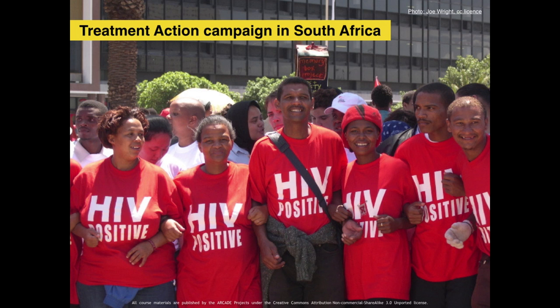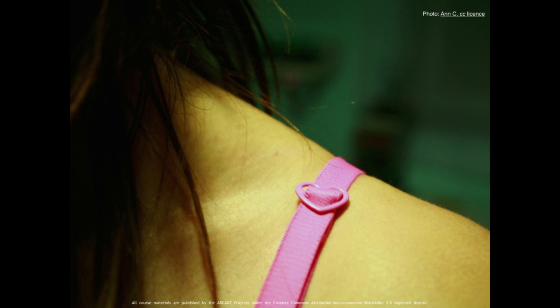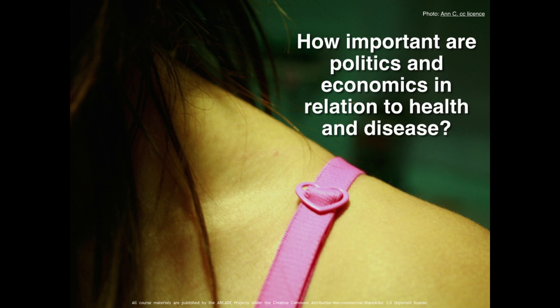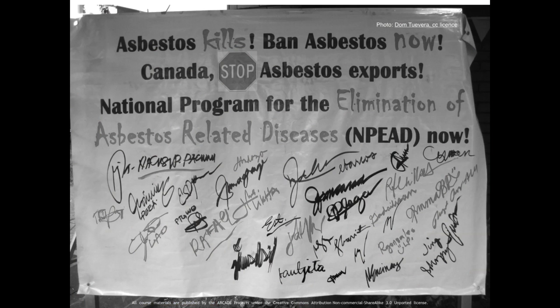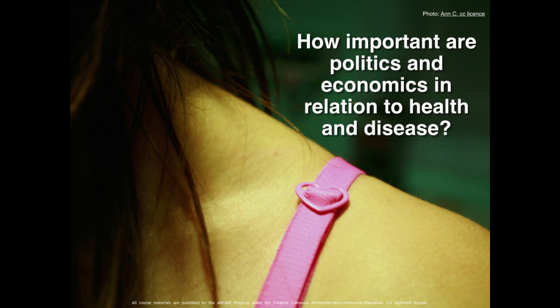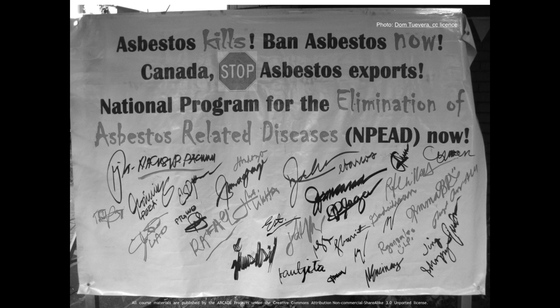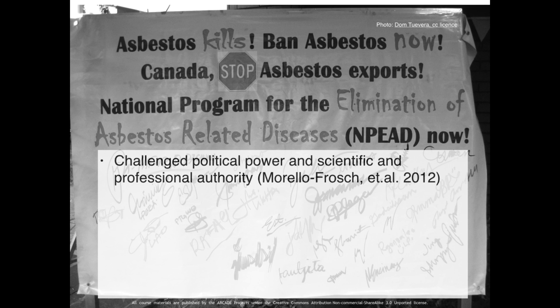In part two of this lecture, I asked how important is economics and politics in relation to health and disease. Looking at the work of social movements helps us to answer this question. Health social movements have been known to challenge political power, as well as scientific and professional authority. They have shown that non-biomedical factors are significant in relation to illness and disease. For example, in relation to asbestos disease, social movements have argued that political and economic priorities have led to the widespread occurrence of asbestos cancer. The work of social movements has also opened up new lines of inquiry in relation to health and its non-biomedical drivers.